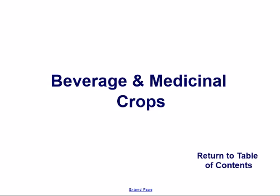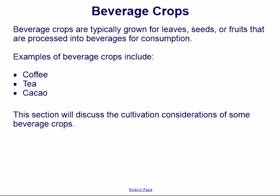Beverage and medicinal crops. Beverage crops are typically grown for leaves, seeds, or fruits that are processed into beverages for consumption. Examples of beverage crops include coffee, tea, and cacao. This section will discuss the cultivation considerations of some beverage crops.